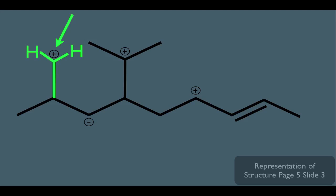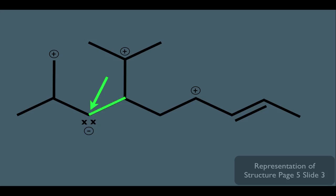And lastly, let's analyze this carbon right here. It has the negative formal charge, and remember what that means: first, it has a lone pair of electrons, so let's note that. We also know it has a total of three bonds — one bond here, one bond here — which means this carbon must have one hydrogen to complete its three bonds.